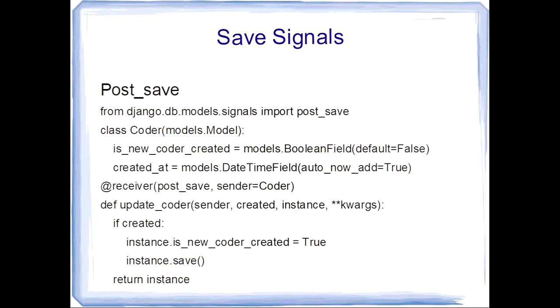Next is post-save signal. This signal is activated each time a model instance is saved. Whenever the particular instance is saved to the database, this signal automatically saves the instance. Again, we see the syntax django.model.signals import post_save.